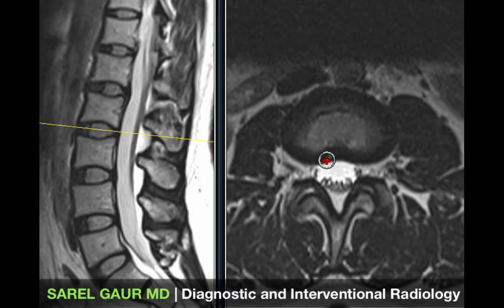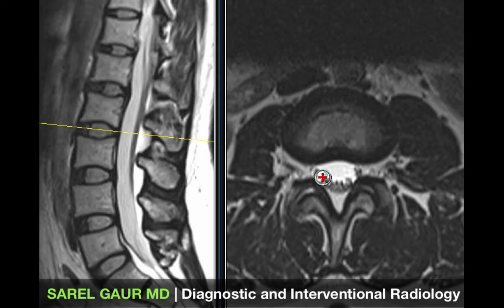Posterior to that I see a round bright collection which is the spinal canal — the dural sac containing the individual nerve roots. This would be called the cauda equina at this level.